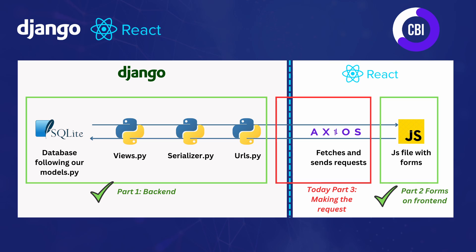In the first part of the CRUD videos we've already set up all of the code for our backend so that it can receive everything that we want to receive. In the second part of CRUD we've already put forms on our frontend and modified them. Now in this third part we're going to bring it all together and use Axios to take the data from our frontend forms and pass it to our backend so it can be stored in our database.